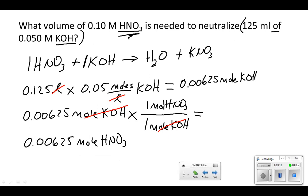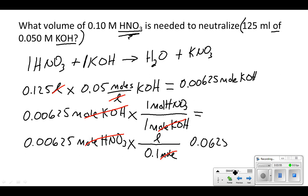Now we have moles of HNO3. The question says what volume of 0.1 molar? We may recognize if we rearrange the molarity equation, we need to divide by the molarity. So we take 0.00625 moles HNO3 divided by 0.1 - molarity is moles per liter. I flipped the liters up on top when I divided by the fraction. Moles of HNO3 will cancel out, and when I divide by 0.1, I get 0.0625 liters. When I move the decimal point over 3 places, I get 62.5 mL. There's our answer to that problem.